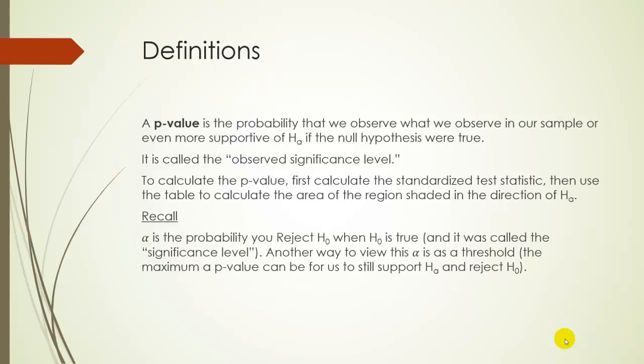Let's recall, alpha is the probability that you reject HO when HO is true. It was called the significance level. Another way to view this alpha value is as a threshold. It's the maximum value that a p-value can be for us to still support HA and reject HO.